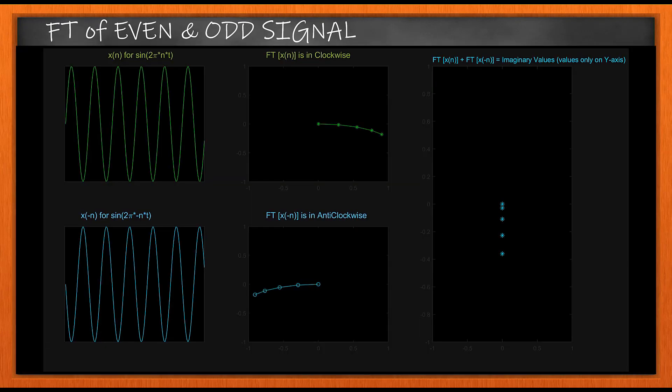The video illustrates the Fourier transform of an even and odd signal. As you can see, the Fourier transform of x(n) for sine is in clockwise direction whereas the Fourier transform of x(-n) is in anticlockwise direction. Summing these two Fourier transforms, you get a vertical line or values only on the imaginary axis.